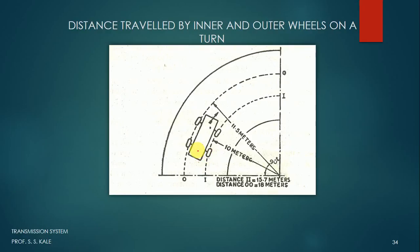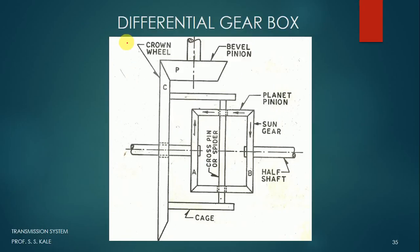In order to avoid that, we should have an arrangement which makes the inner wheel rotate at a lesser speed and the outer wheel rotate at more speed. For that particular case, we are going to use a differential gearbox. So the function of the differential gearbox is to change the speed of the inner wheel and outer wheel while taking a turn, whereas when going on a normal road, the speed of both wheels should be the same.